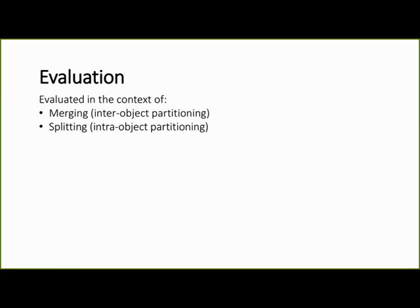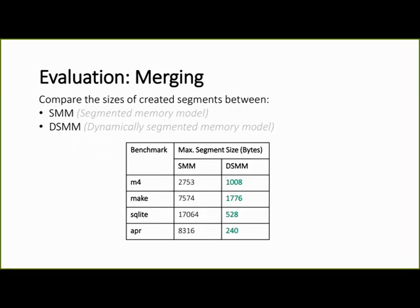We evaluate our model in the context of the merging and splitting operations. So let's start with the merging. Here we compare the sizes of the created segments with the two approaches. We have SMM, the original segmented memory model, and we have DSMM, our dynamic version of SMM. As you can see, with our approach DSMM, the segments are indeed much smaller.